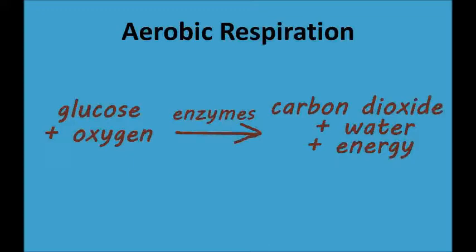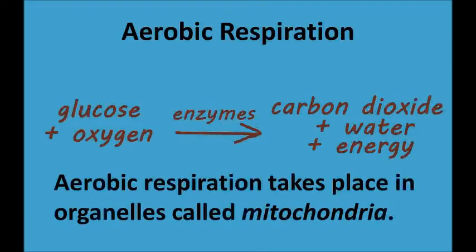If the word equation for aerobic respiration looks familiar to you, you shouldn't be too surprised. It's almost the exact opposite of the word equation for photosynthesis, which I've talked about in the last video. The ingredients of photosynthesis are the by-products of aerobic respiration, and vice versa. The enzymes indicated in the equation are located in the mitochondria found in the cells of most living organisms. Just as plants carry out photosynthesis in organelles called chloroplasts — because that's where the chlorophyll required for photosynthesis is located — aerobic respiration takes place in organelles called mitochondria, because they contain the enzymes necessary for aerobic respiration.